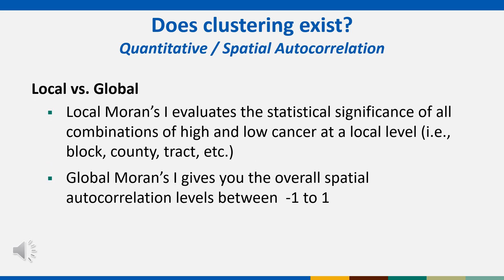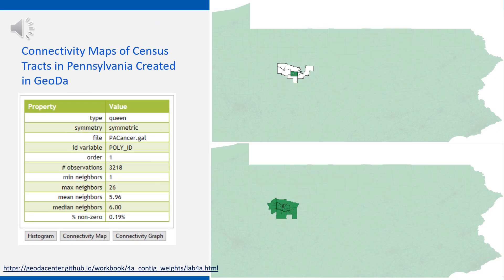Along with Local Moran's I, we will be doing a Global Moran's I. While a Local Moran's I is interested in individual geographic units, the Global Moran's I looks at the entire area and checks for overall autocorrelation of the data. The value will be between minus one and one, like a typical correlation value. When starting this analysis in GeoDa, it is important to first identify a weighting matrix, which identifies the nearest neighbors of each census tract or geography. More can be found at the link provided below.